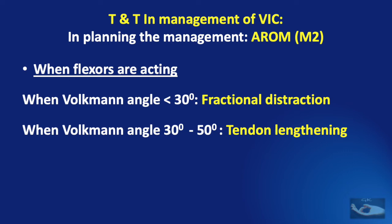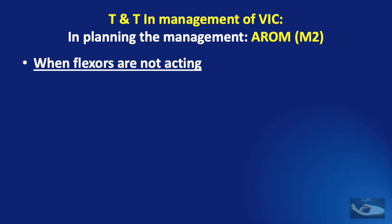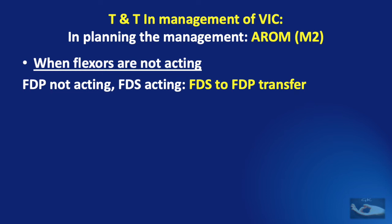When the Volkmann's angle is about 30 to 50 degrees, a tendon lengthening procedure with Z-plasty can be planned. If the angle is more than 50 degrees, a muscle slide operation should be done. When the flexors are not acting, it could be the FDP alone not acting while the FDS is acting, as in cases of Type 1 VIC.